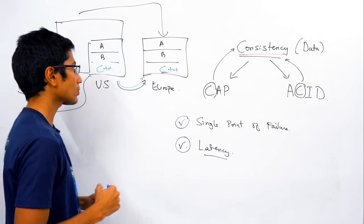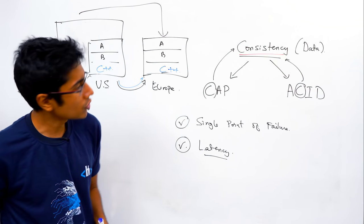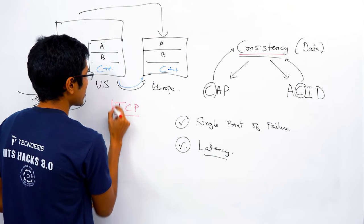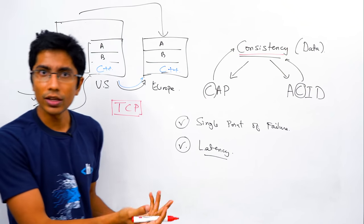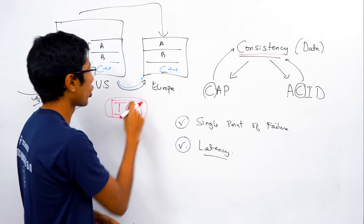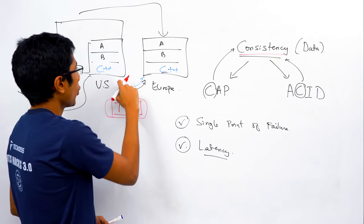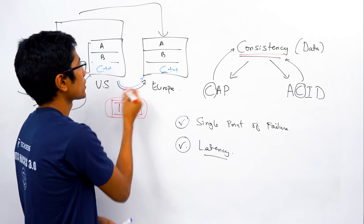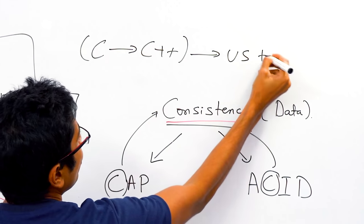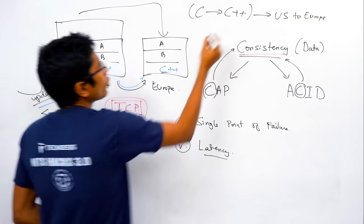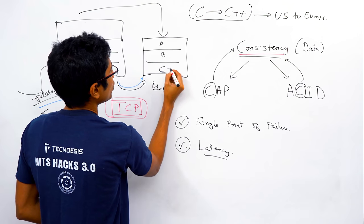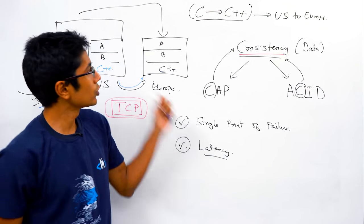We can use an electronic message — a network protocol like TCP, which provides reliable and ordered delivery. There's a lot of good stuff that comes with TCP. When you send an update 'change C to C++' from the USA to Europe, when Europe gets this message, they internally change C to C++ in their database. That's all you need — a message transmission and you're done, right?